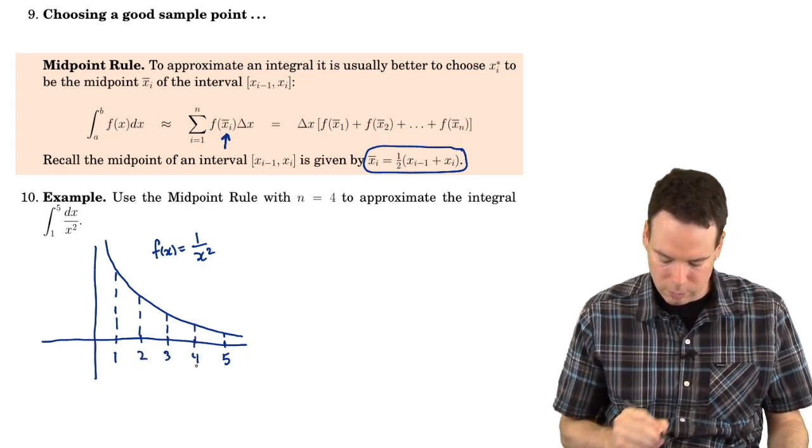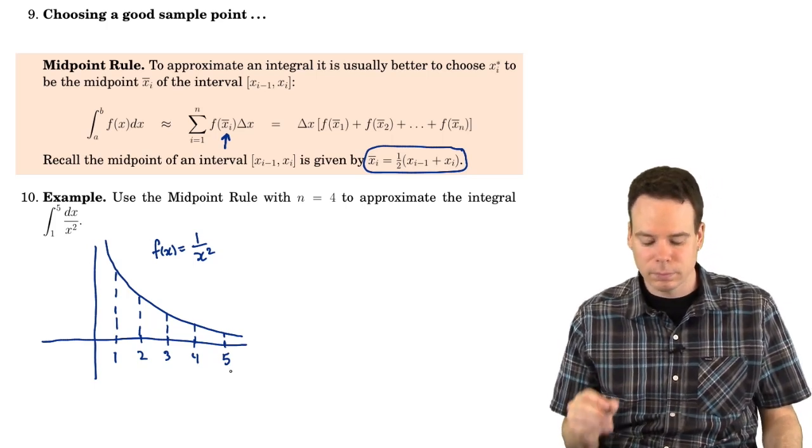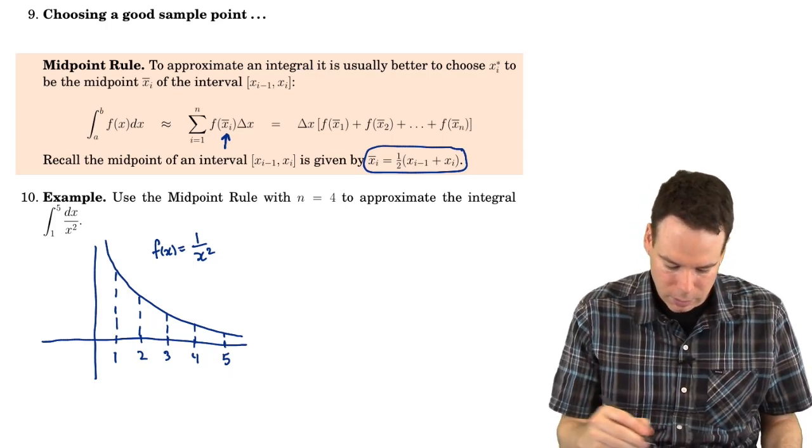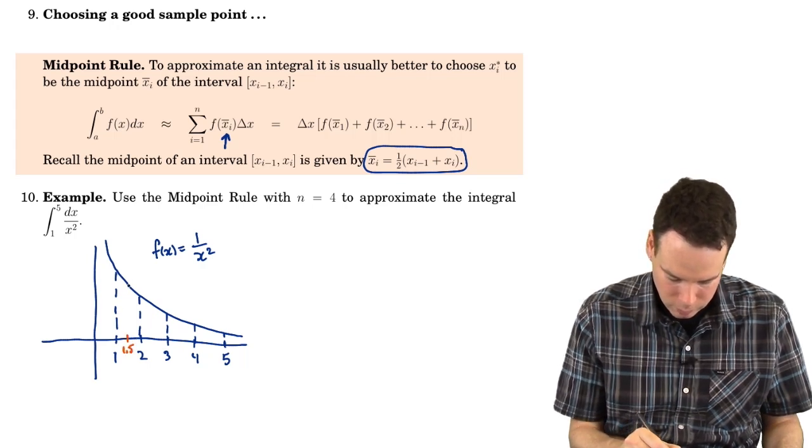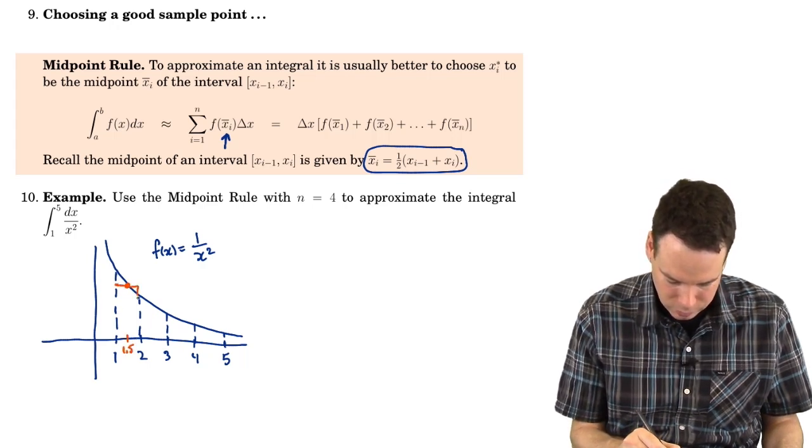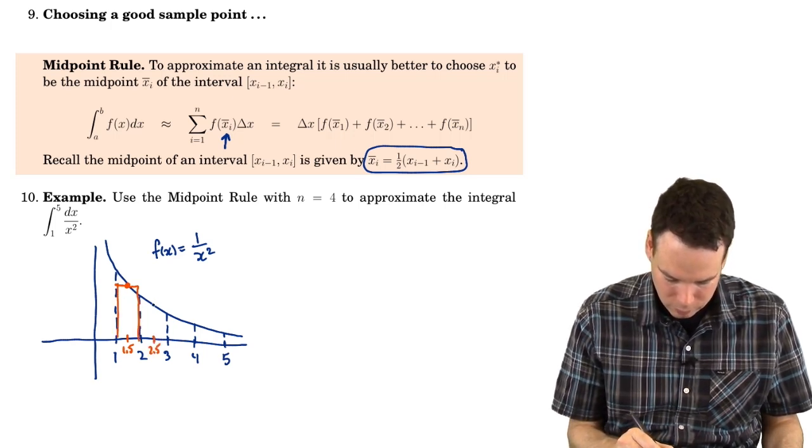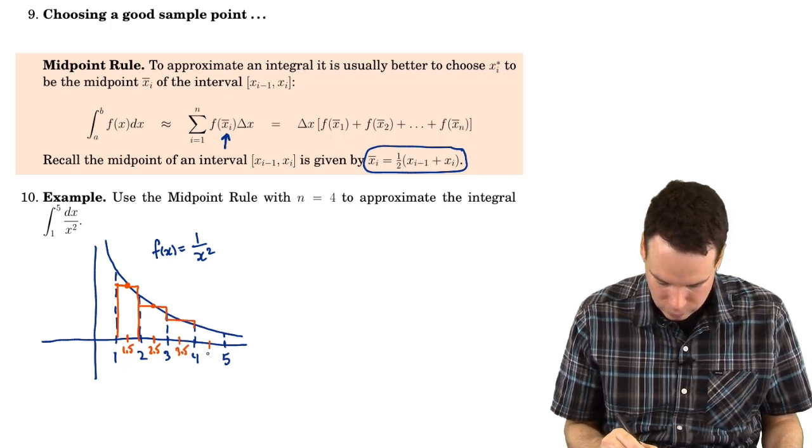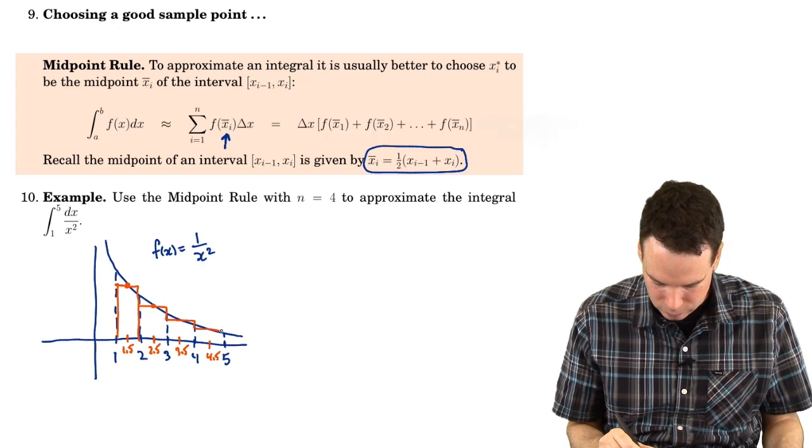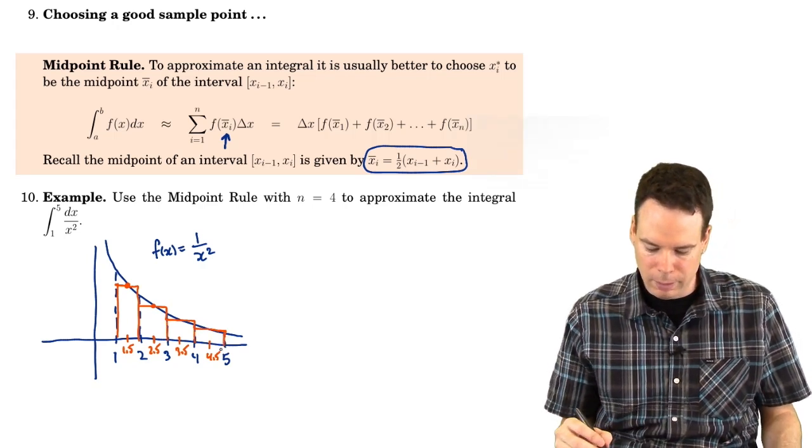The values of the endpoints of the intervals are 1, 2, 3, 4, 5. We're interested in midpoints. So the midpoint here would be 1.5 and so then we want to cap it off using that midpoint. And then the midpoint here would be 2.5 and 3.5 and 4.5. And those are the areas that we want to add up.